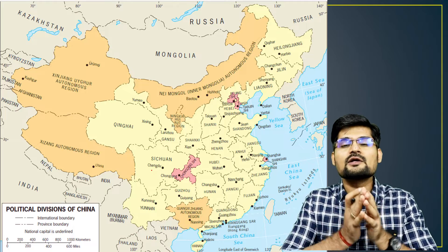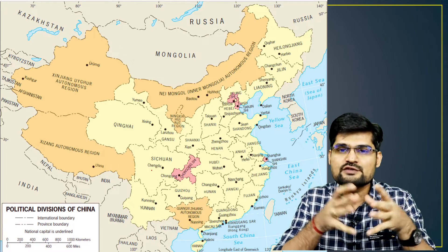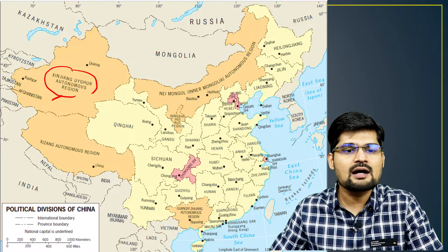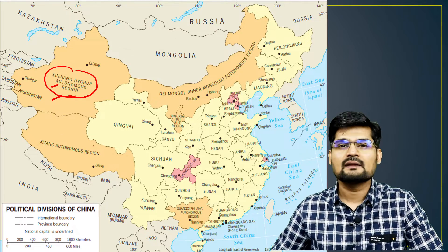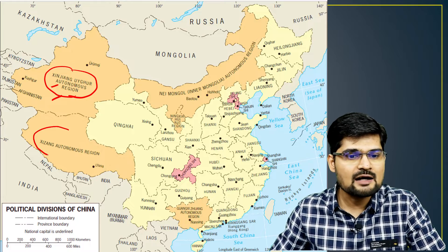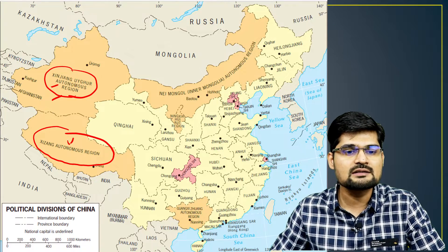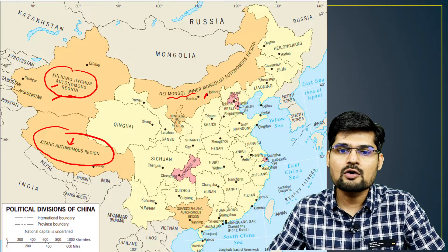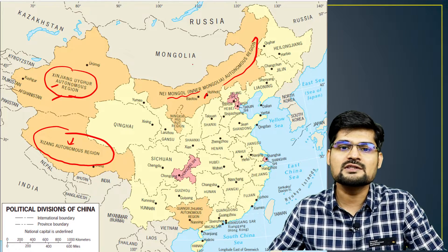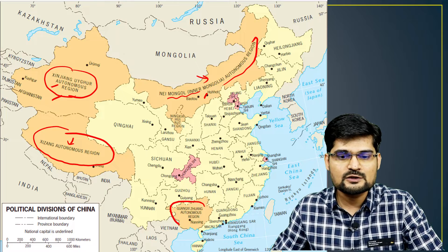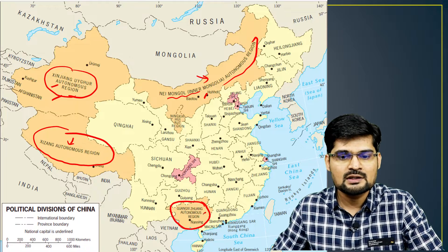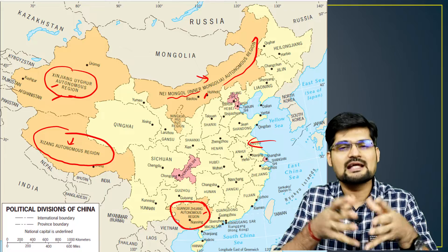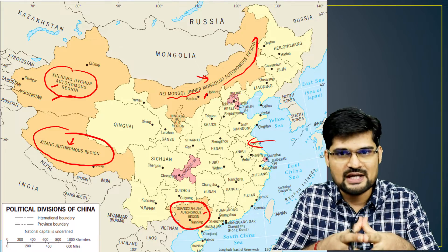Let's look into the political division of China. The western region is called the Xinjiang Uyghur Autonomous Region. Then there is the Xizang province — the Tibetan autonomous region. In the north is the Inner Mongolia Autonomous Region. In the south there is also the Zhuang autonomous region. The rest of China is the original core belt of China.